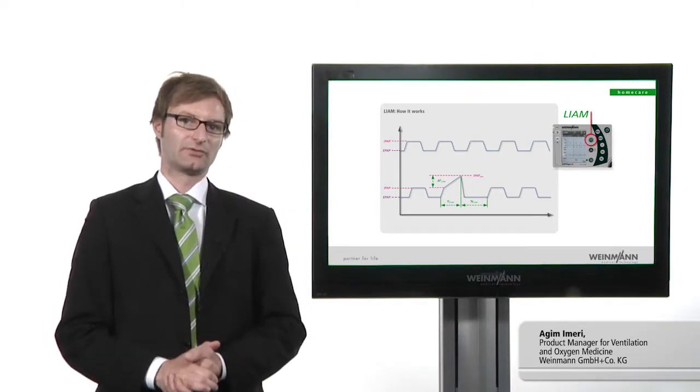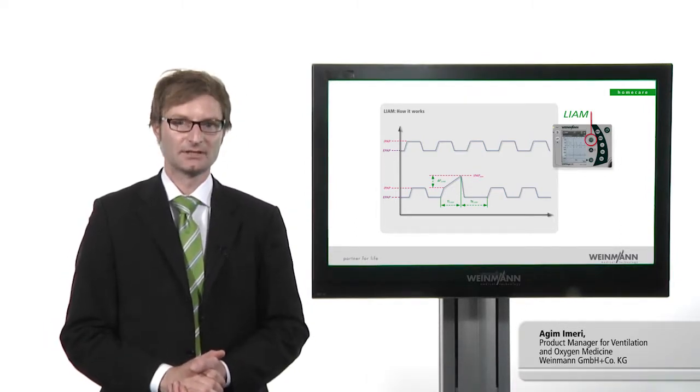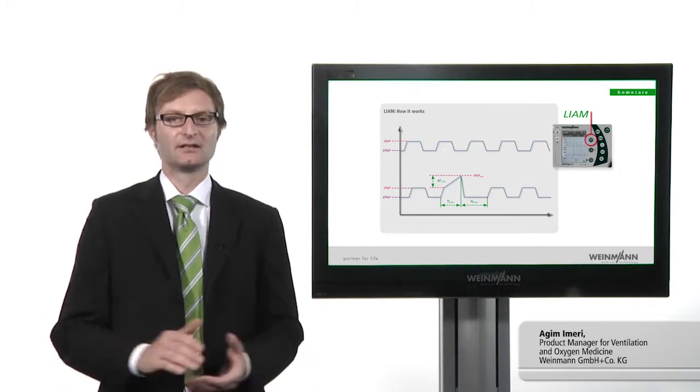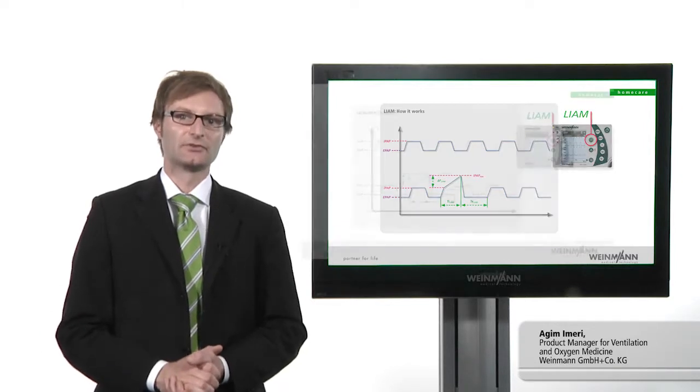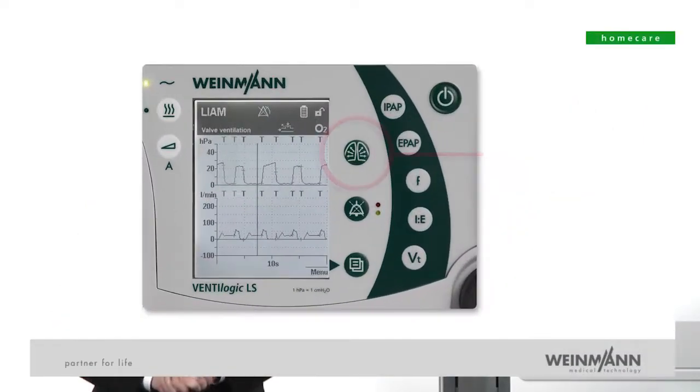The LIAM function is triggered by pressing the LIAM button. The patient is able to decide independently when he or she would like to use this function. Similarly, pressing on the LIAM button can stop the function prematurely at any time.